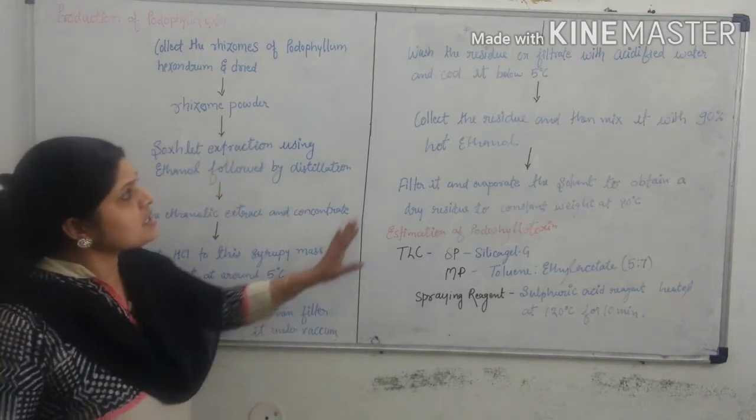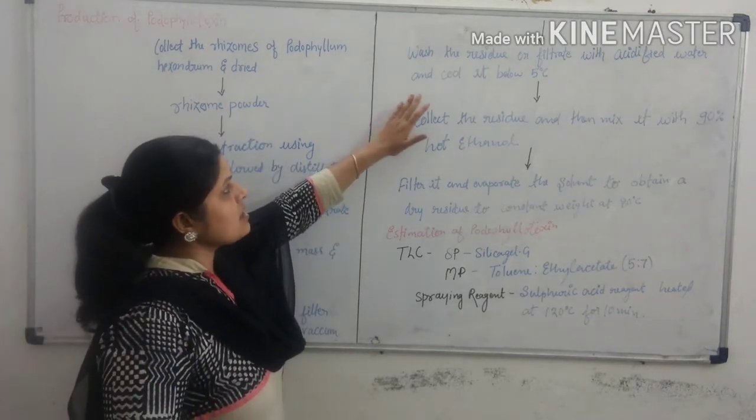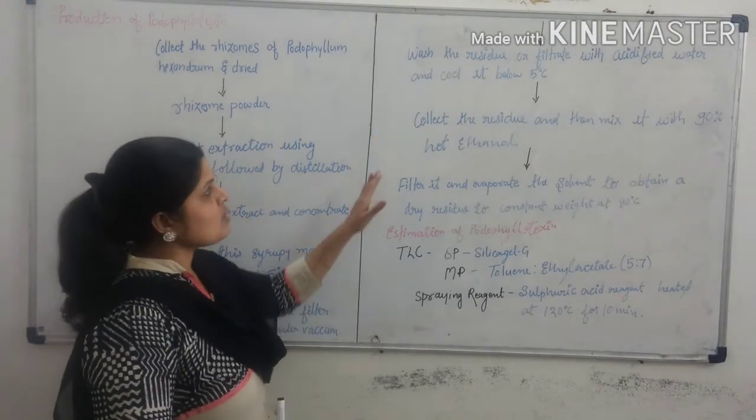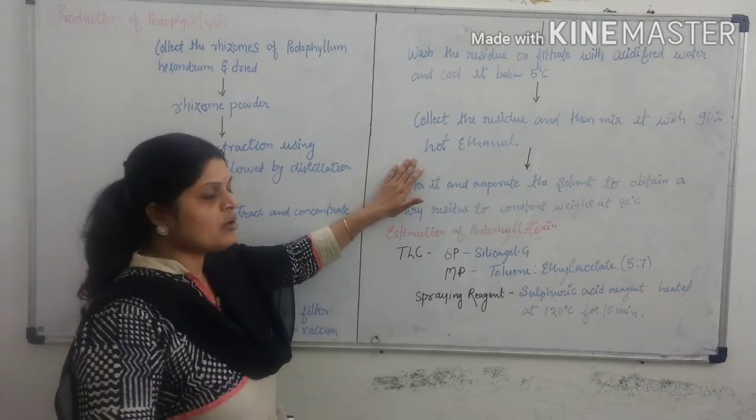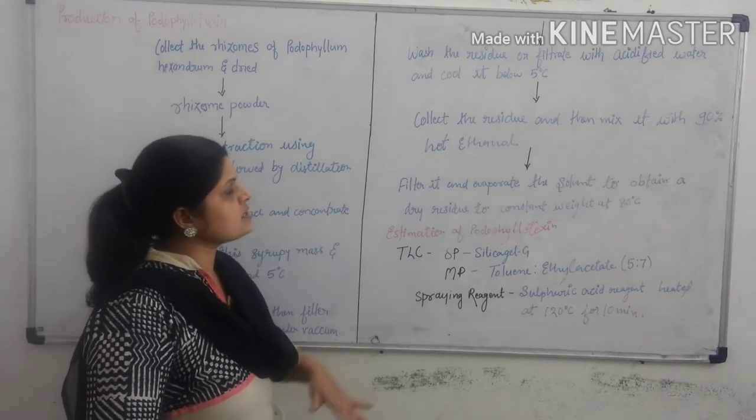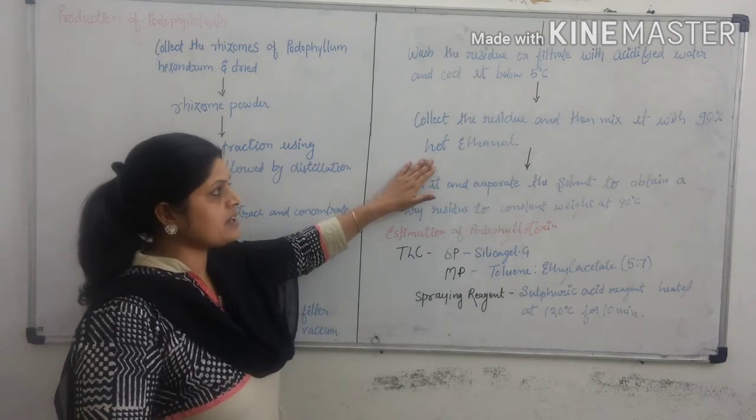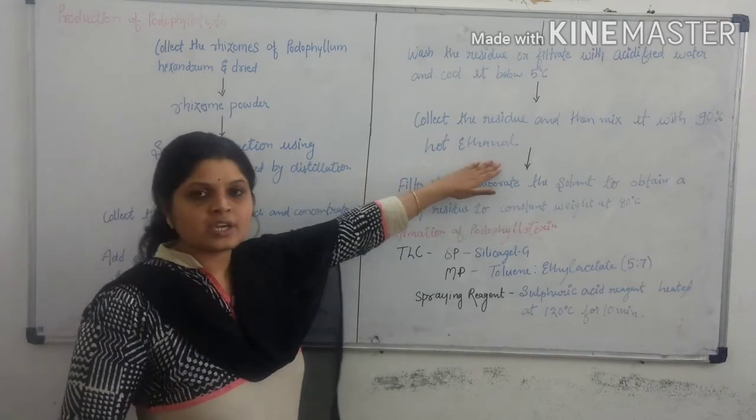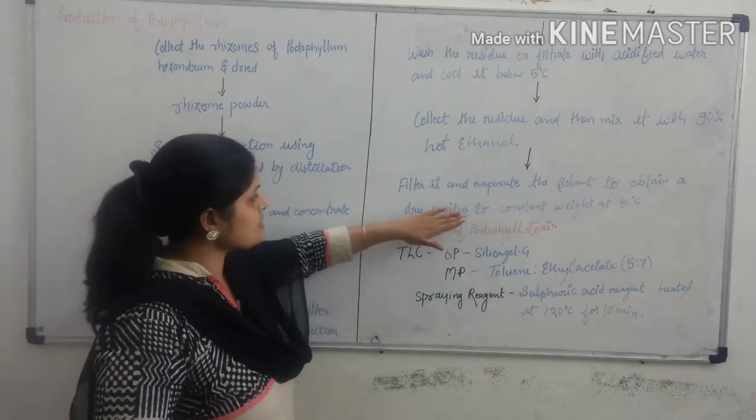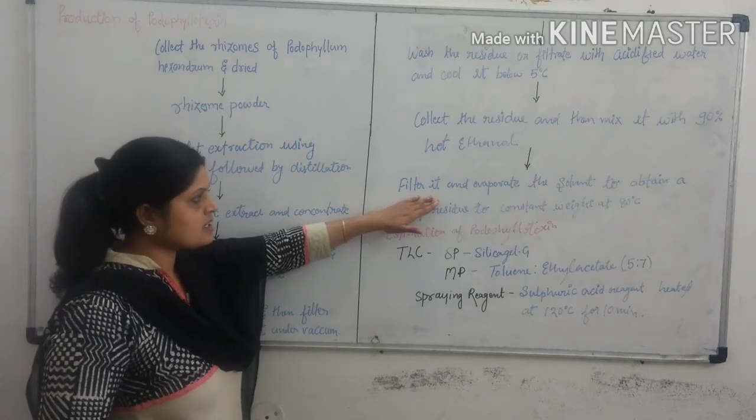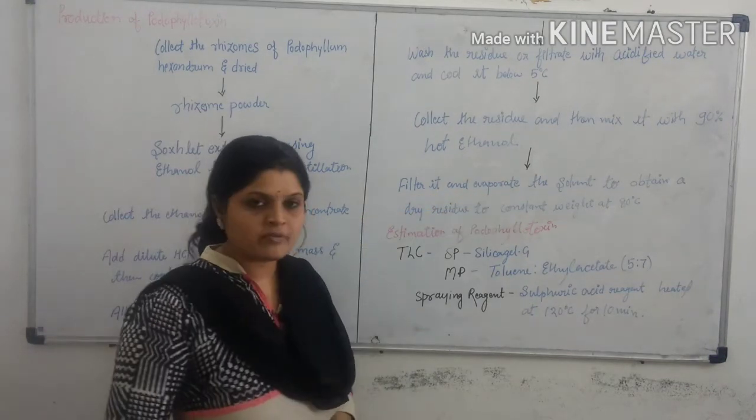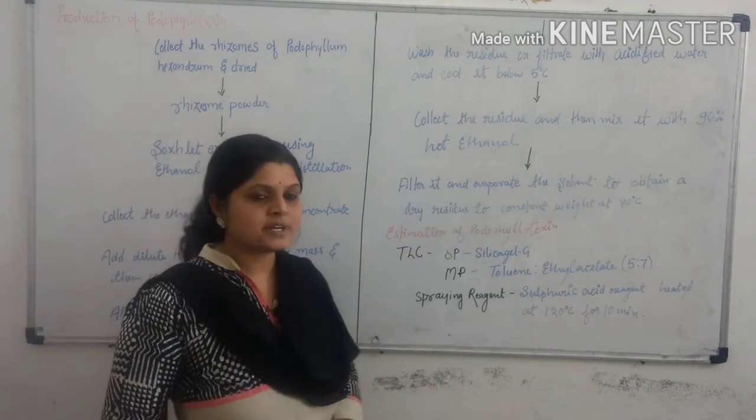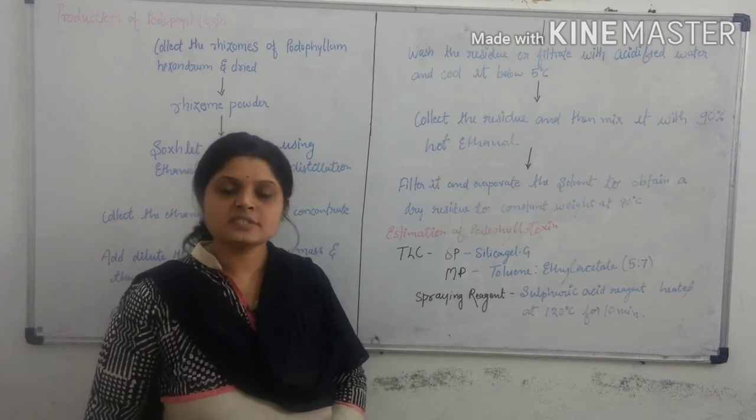It is washed. The residue or filtrate with acidified water and cool it below 5-30°C. Collect the residue and then mix it with 90% hot ether. It is filtered and evaporate the solvent to obtain a dry residue to constant weight at 80°C.